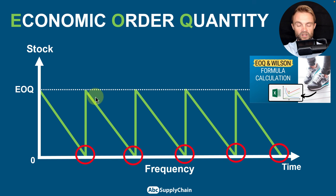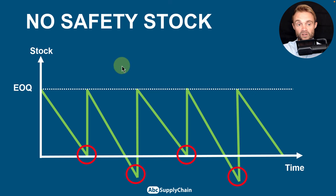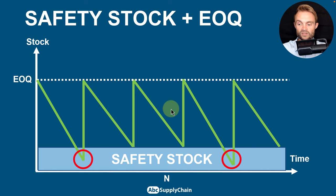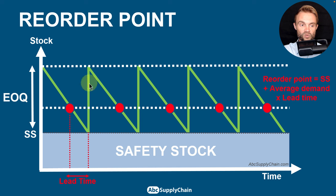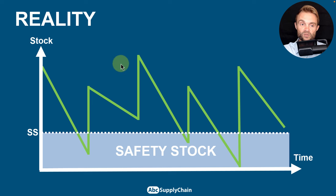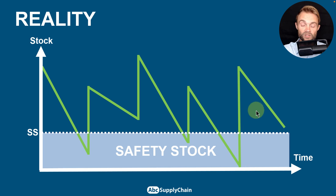Before jumping to the formulas, I want to revisit the Economic Order Quantity — covered in my previous video — which optimizes order quantity and frequency but does not consider safety stock. We combine EOQ with safety stock to optimize customer service, inventory cost, and transaction cost simultaneously. The reorder point tells you when to order: not when you hit safety stock, but earlier, factoring in lead time to replenish back to full EOQ plus safety stock.